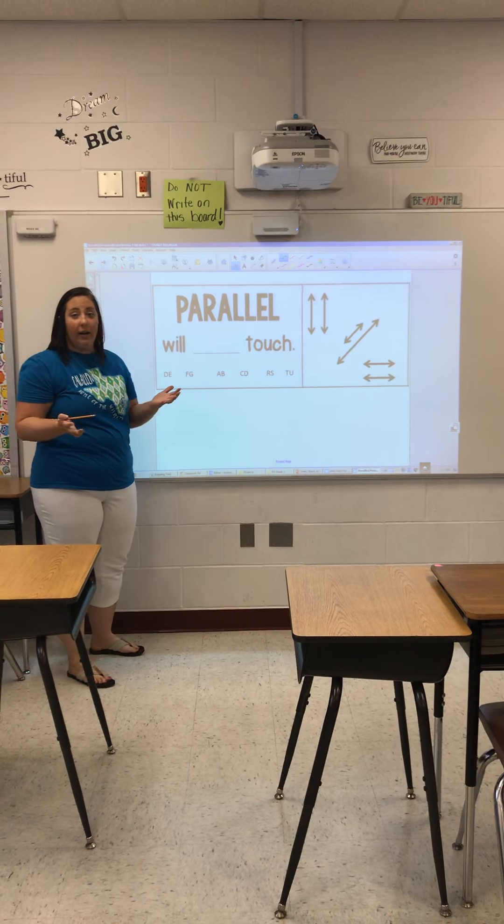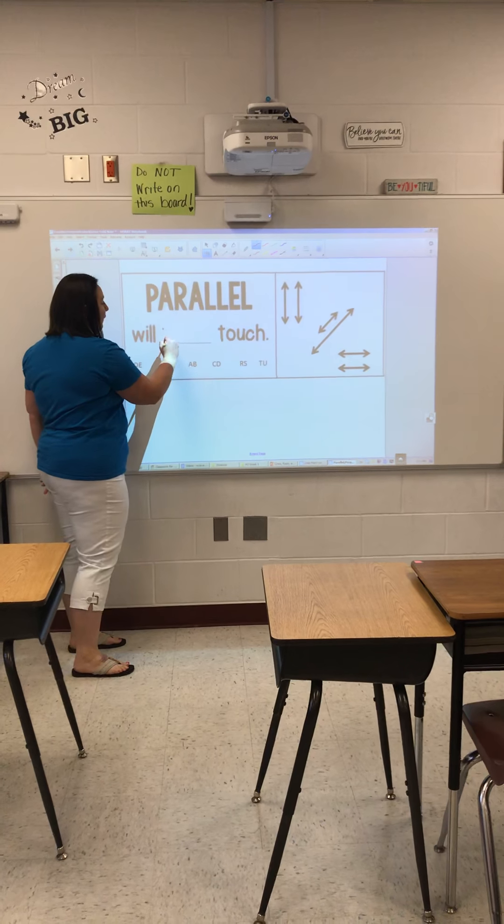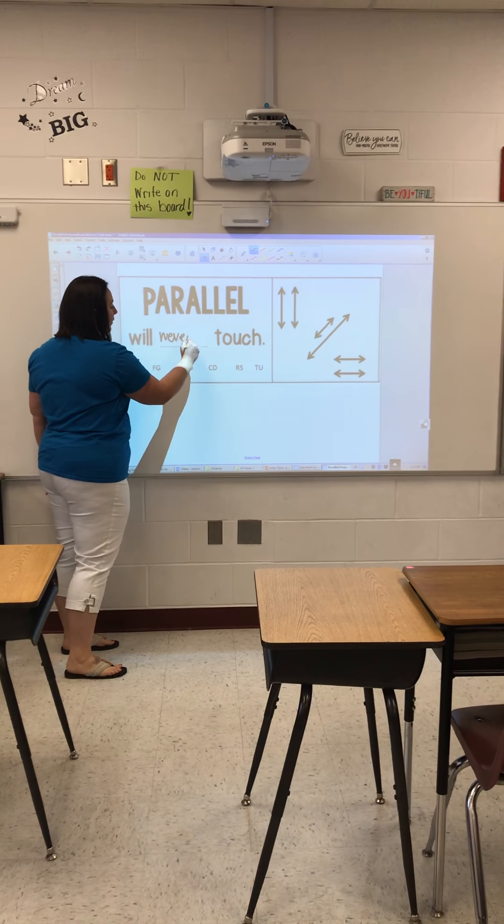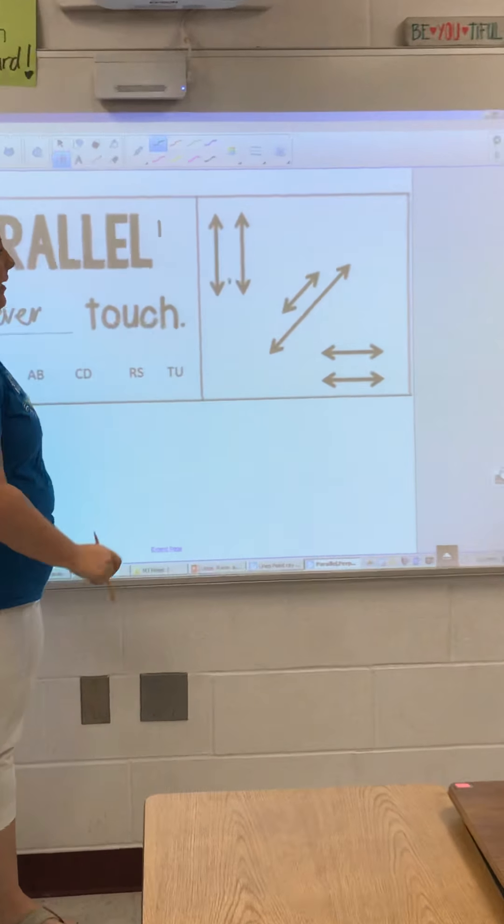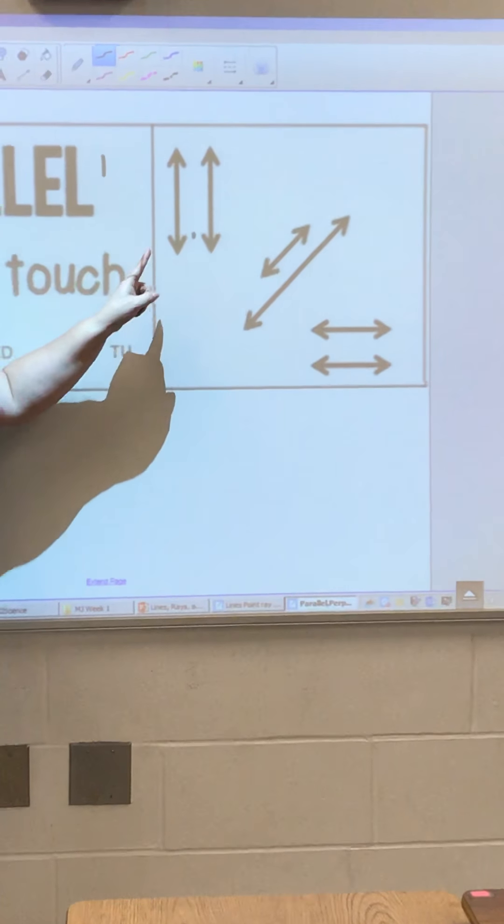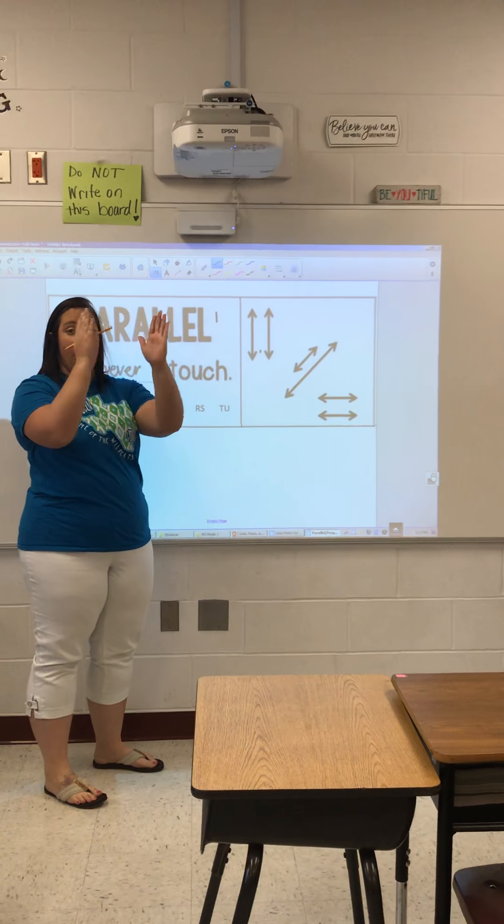A parallel line is any set of lines that will never touch. If you look over here, you have two sets of parallel lines, and they are never going to intersect or touch. They're never going to cross. They're parallel.